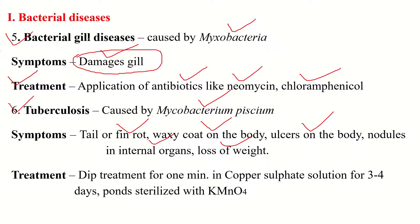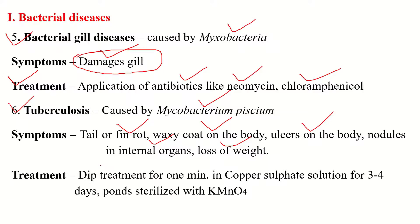The treatment for Tuberculosis: a dip treatment is given for 1 minute in copper sulfate solution for 3 to 4 days. Alternatively, the fishes may be destroyed and the pond sterilized with KMnO4 solution. These are the treatments for Tuberculosis disease in fish.